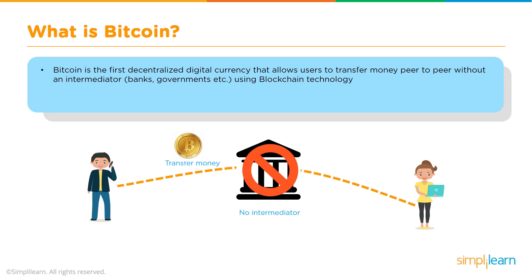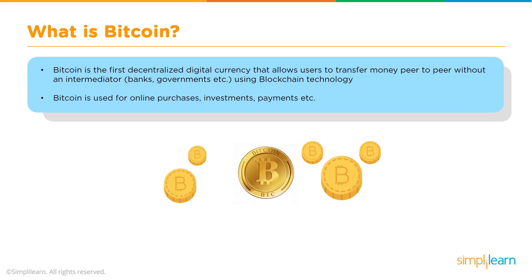Bitcoin is the first decentralized digital currency that allows users to transfer money peer-to-peer without any intermediaries like banks, governments, agents, or brokers. Nothing is involved and all this is done using blockchain technology. Two parties wanting to exchange or transfer money don't need an intermediary. Bitcoin can be used for online purchases, e-commerce transactions, as an investment instrument, and primarily for payments to buy goods and services.